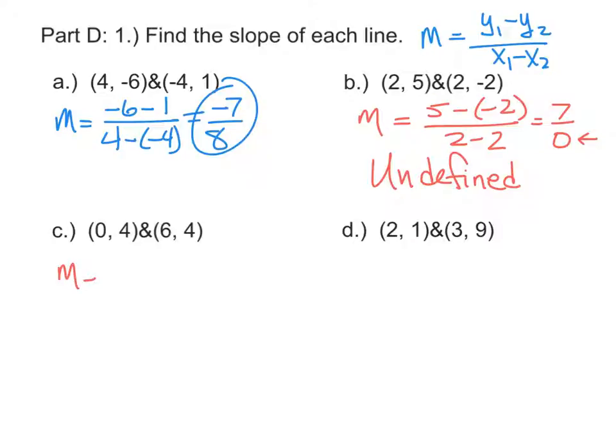Let's try it again with (0, 4) and (6, 4). We subtract the y's in the numerator: 4 minus 4, and subtract the x's in the denominator: 0 minus 6, and that'll give us 0 over negative 6.